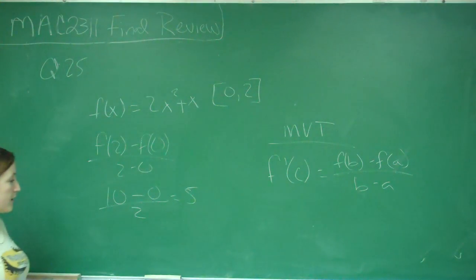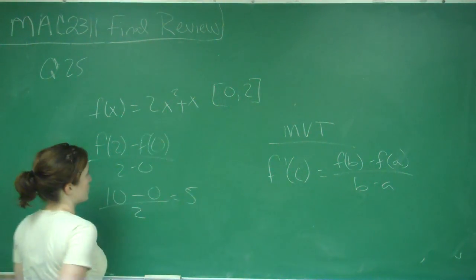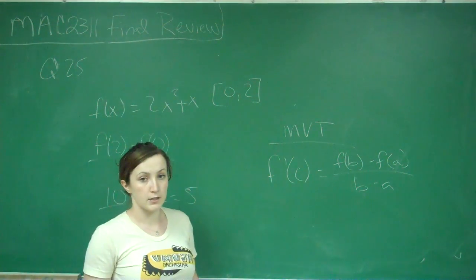So what we're going to do now that we have that f of B minus f of A all over B minus A is 5, we're going to take the derivative of this function and set it equal to 5 and solve for x.